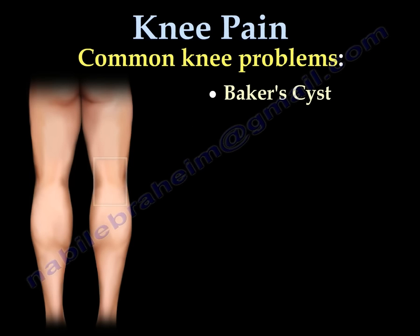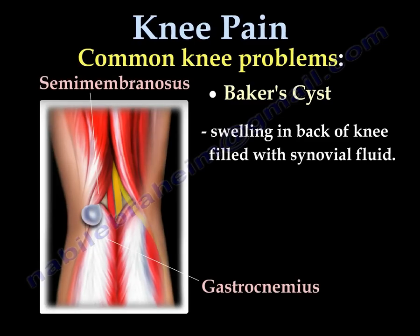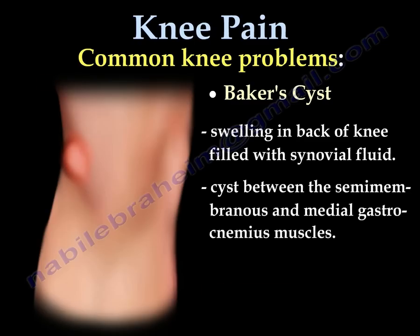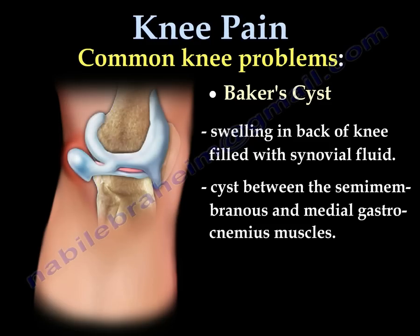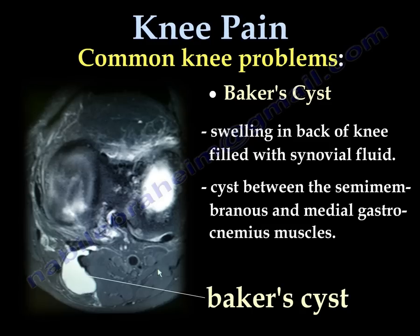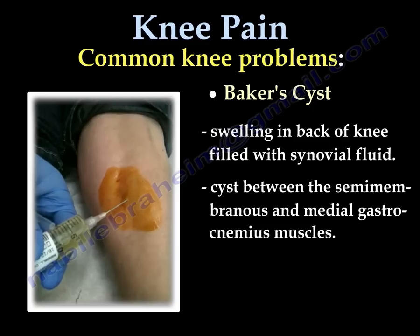Baker's Cyst is a swelling in the back of the knee filled with synovial fluid. It is usually located between the semimembranosus and the medial gastrocnemius. Here is an axial MRI cut showing the Baker's cyst in the back of the knee, and a video demonstrating aspiration of the Baker's cyst.